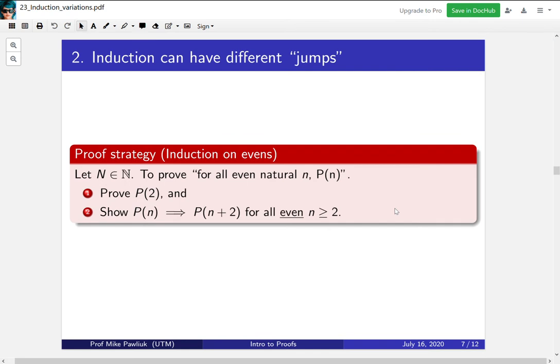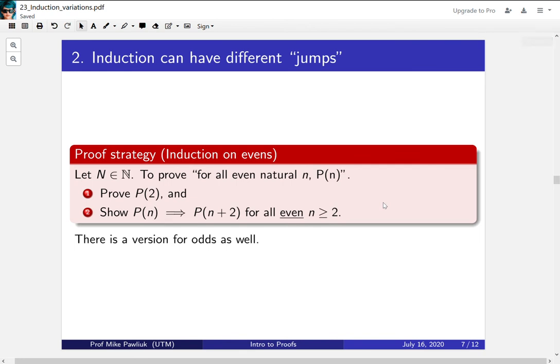Another thing we can modify is how much induction jumps. So here's a proof strategy for induction on the evens. To prove a statement of the form for all even natural numbers, p of n is true, prove p of 2, and then show that p(n) implies p(n+2) for all the even natural numbers. In other words, you start at 2 and you show that you can jump up by 2 every time. If you can do that, then you'll have proved it for all even natural numbers. There's a similar version for odds as well, and you should try to write this down what it is.